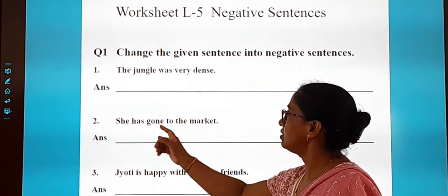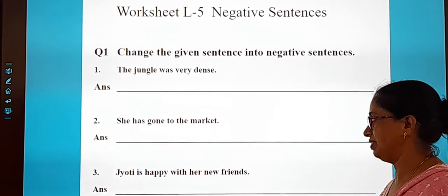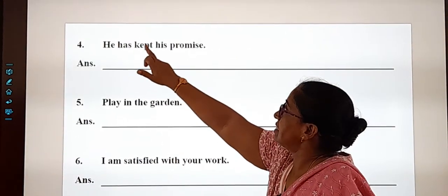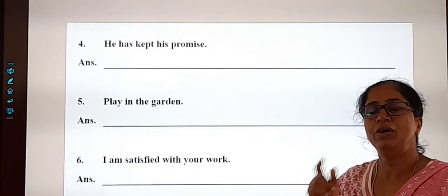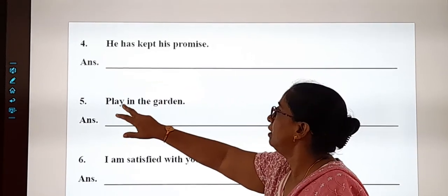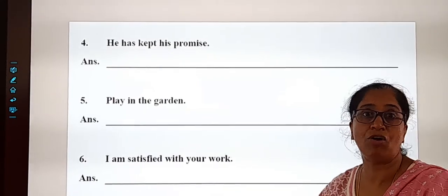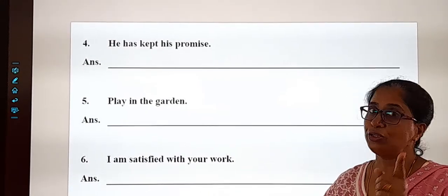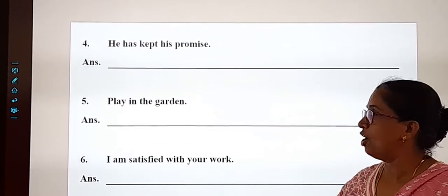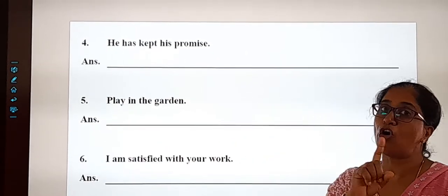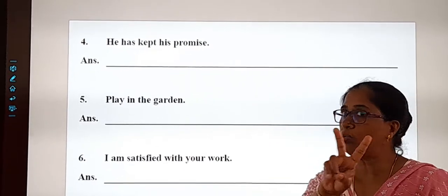Try these yourself: 'She has gone to the market', 'Jyoti is happy with her new friend', 'He has kept his promise' — find the verb and put 'no' or 'not' after it. 'Play in the garden' is a command sentence, so to make it negative, put 'don't' at the beginning: 'Don't play in the garden'.